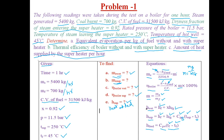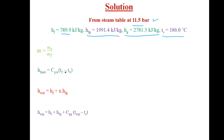Now, the mass ratio m = ms/mf. Mass of steam is 5400 kg per hour and mass of fuel is 700 kg per hour. So m = 5400/700, which works out to be 7.71 kg of steam per kg of fuel.